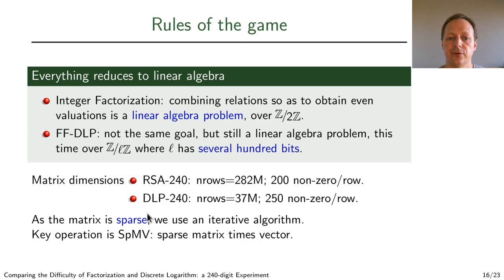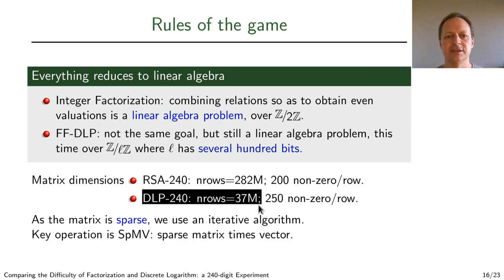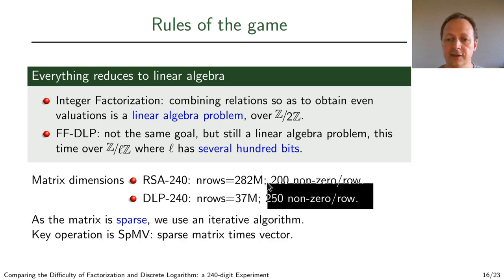Now on to linear algebra. Linear algebra is the second most important part in the computation. There's a huge difference between what we have in the context of factoring and in the context of discrete logs, namely that the field of definition changes. Linear algebra for DLP is harder. For this reason, our strategy was aiming at having a smaller matrix for DLP, and this was pretty effective. By spending a lot more effort in finding relations for DLP, we were able to obtain a matrix that was much smaller. It's important to notice as well that this matrix in both cases is very sparse because it has very few non-zero elements per row. This is less than one non-zero in a million.